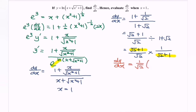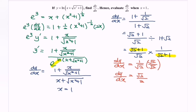Multiplying by the conjugate √2/√2, we get dy/dx = √2 / 2. That is the value of dy/dx when x = 1.